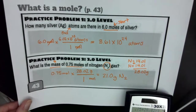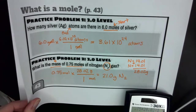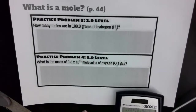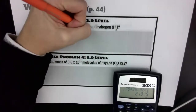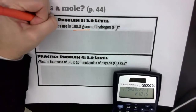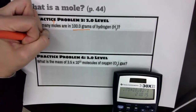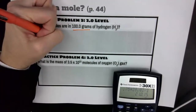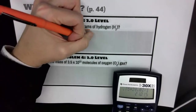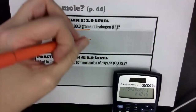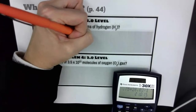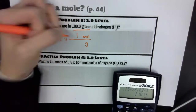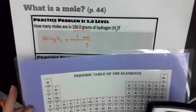That was practice problem number two. Now let's go on to practice problem number three: how many moles are there in 100 grams of hydrogen gas? My starting value is 100 grams, and I'm looking for number of moles. So I take my 100 grams of hydrogen — H₂ — and do times in a line to set up my ratio. I want to get rid of grams, so grams go on the bottom, and I want to get to moles, so moles go on top. One mole is equal to a certain number of grams, which I'll find on the table.